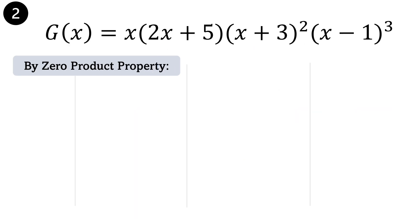Number 2: g of x equals x times the quantity 2x plus 5 times the quantity x plus 3 squared times the quantity x minus 1 cubed. By applying the zero product property, we start with x: x is equal to 0.